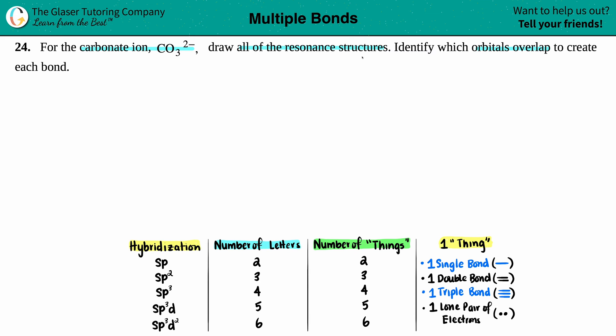This will kind of be like a review. We have another playlist just designated to drawing Lewis structures, so if you need a more in-depth explanation, we've got you covered over there — just go check the channel out. When we have to draw carbonate, which is CO3 2-, remember the least electronegative element always goes in the middle. Oxygen is more electronegative — it's more to the right on the periodic table — so carbon would be in the middle, surrounded by the three oxygens.